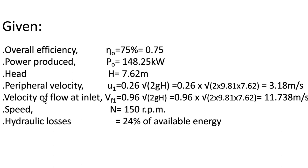The velocity of flow at inlet is given as 0.96√(2gh). Substituting the value for h, we get vf₁ as 11.738 meters per second. The speed of the turbine is 150 rpm and the hydraulic losses are 24% of the available energy.